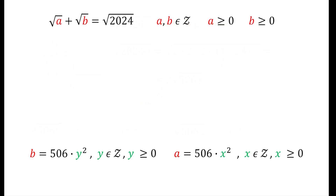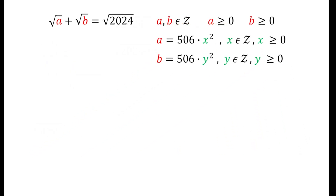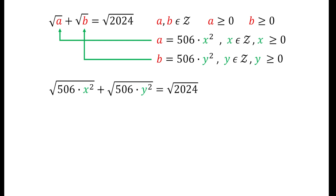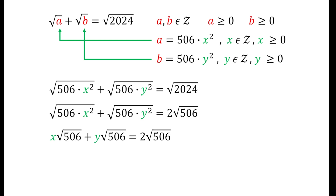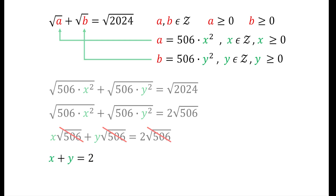We now substitute the values of a and b back into our original equation. Simplifying √2024 = 2√506, and simplifying the left side by bringing x and y in front of the square root, we can cancel the common factor √506 from both sides. This gives us x + y = 2.